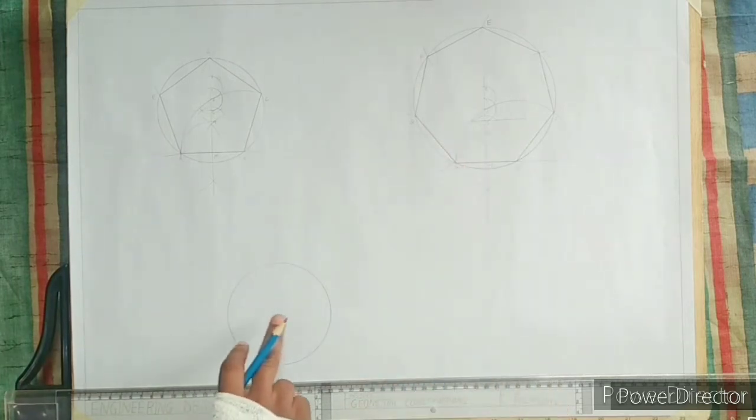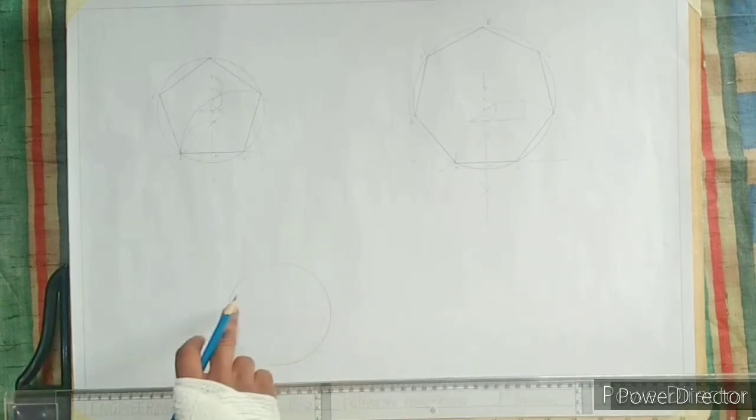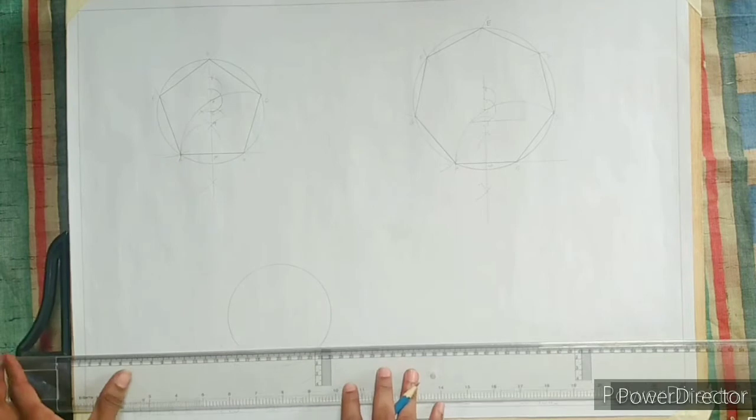Step 2. Draw a line that passes through the center and touches the circle at both sides and divide it into 6 equal parts.